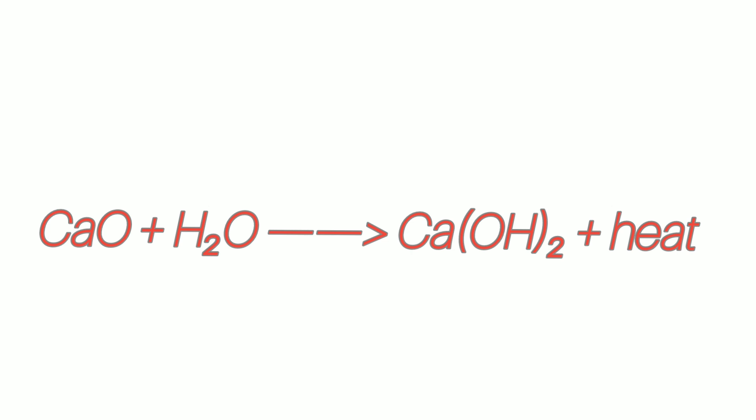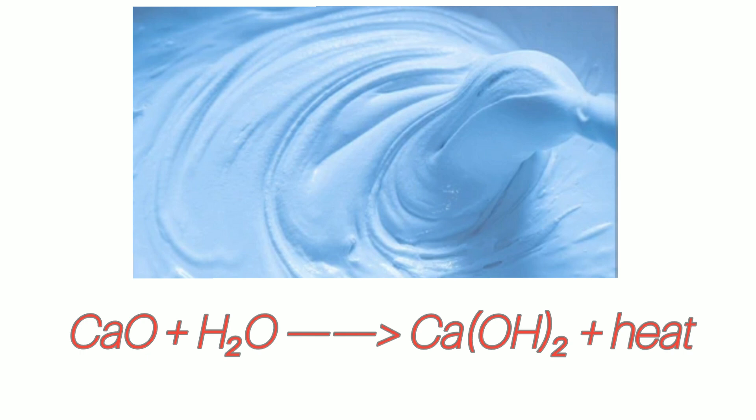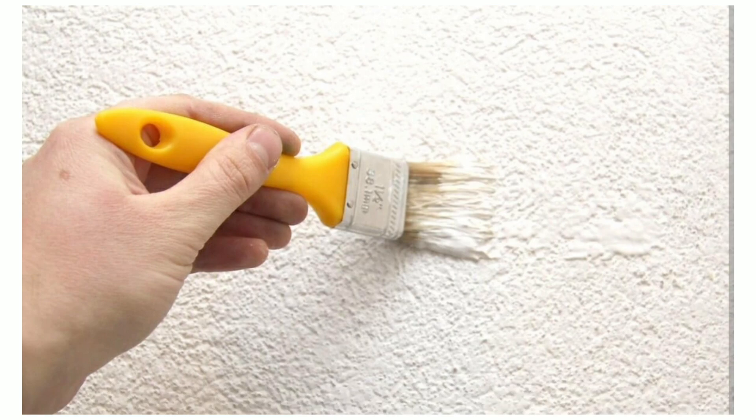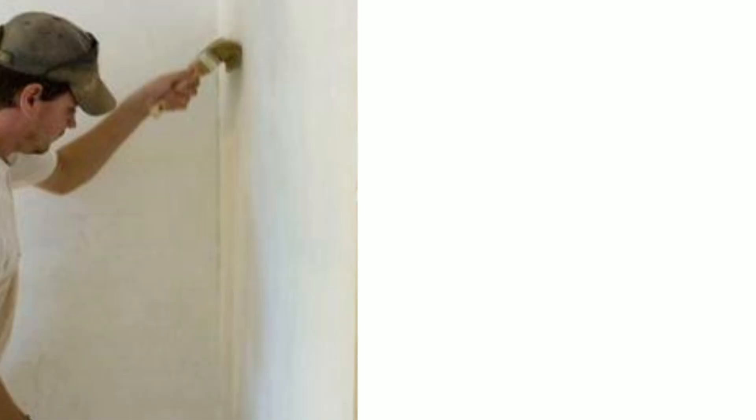Heat is released during this reaction. The aqueous solution of calcium hydroxide is applied on the wall as whitewash. When applied, it reacts slowly with carbon dioxide in the atmosphere to produce a thin layer of calcium carbonate on the wall. This takes approximately two to three days.